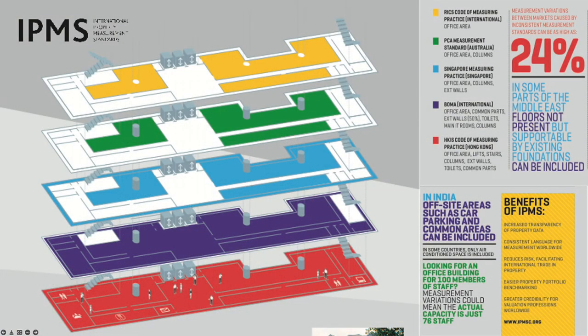IPMS published a diagram showing the same office floor measured under different standards. Red was Hong Kong, purple was BOMA, blue was Singapore, green was PCA, and yellow was RICS. If a building measured one million square feet under the Hong Kong standard and you applied the RICS standard, it would measure 24% smaller — just based on the measurement method. This illustrates why IPMS wanted to create a standardized comparison method. IPMS is also a simpler standard that doesn't do any apportionment of service areas, making it useful for developing nations as a municipal standard for entitlements.